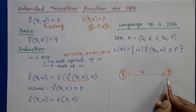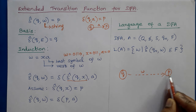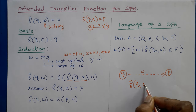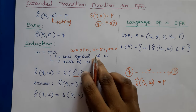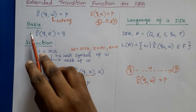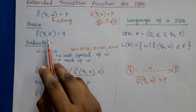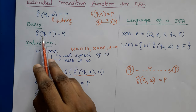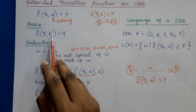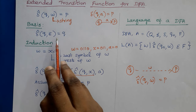There can be many states in between Q and P. After reading all the symbols of W, if the DFA is in state P, it can be written as delta-cap(Q, W) = P. This is the formal definition for the extended transition function. The basis condition is: delta-cap(Q, epsilon) = Q. That is, without reading any input symbol, if we are in state Q, we will still remain in Q. Epsilon is the empty string.